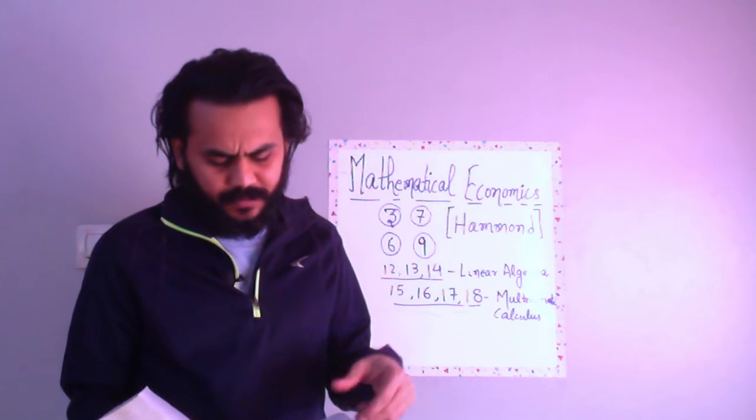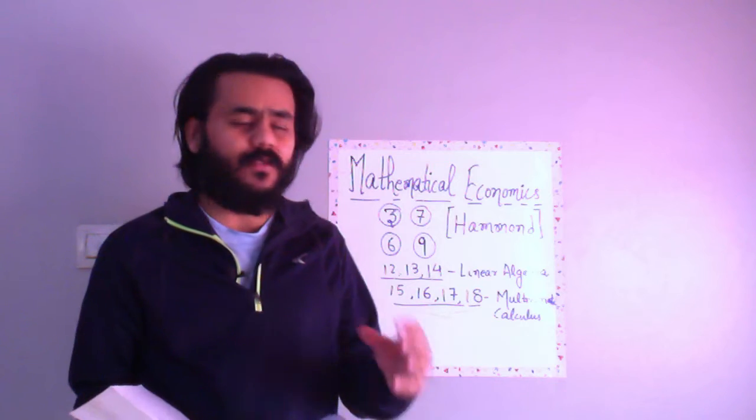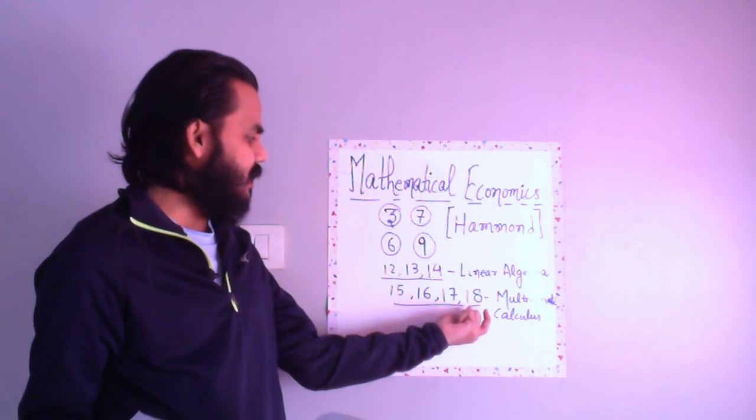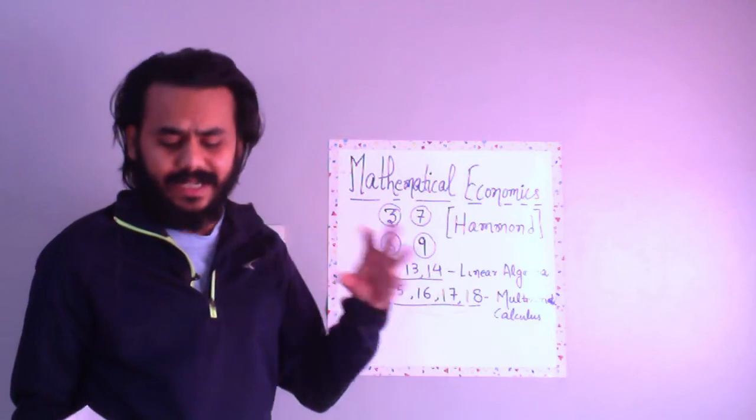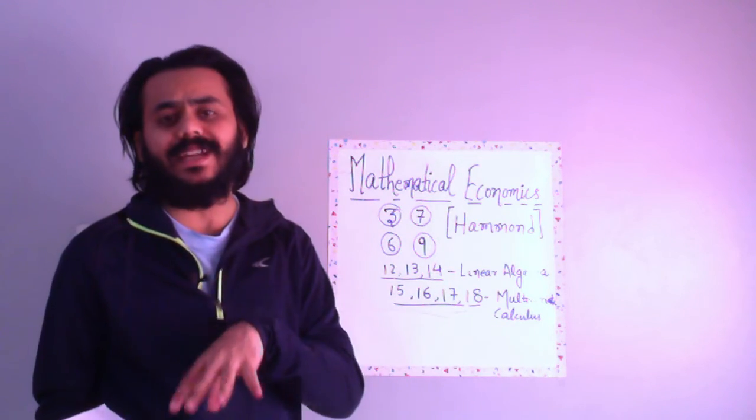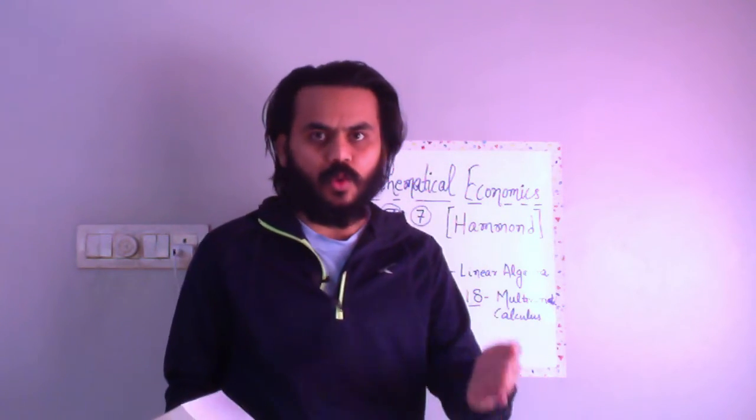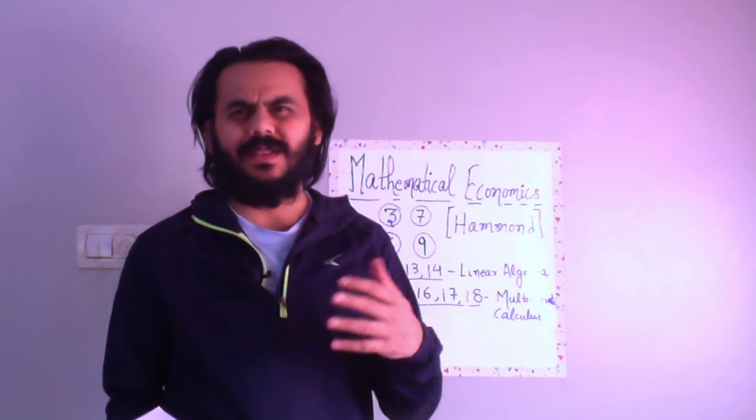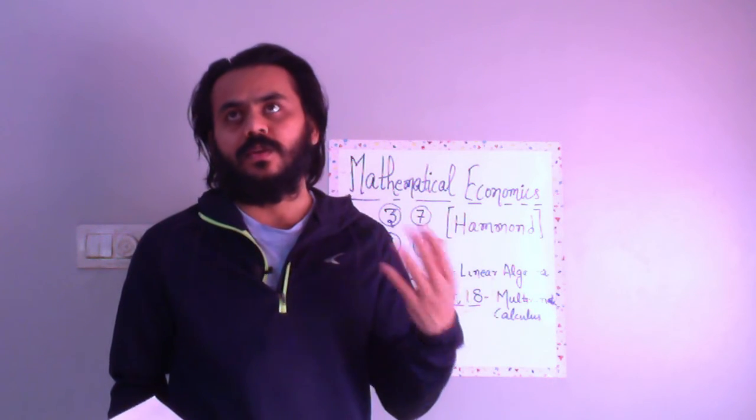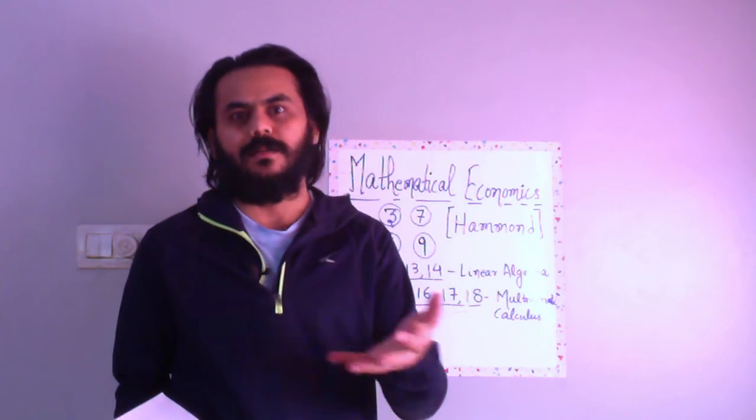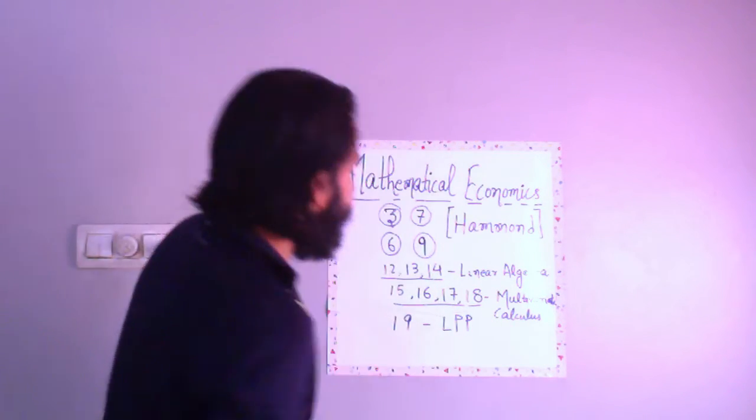Then you have linear programming in chapter nineteen. Linear programming is important because it's part of constraint optimization. Sometimes you can club this in chapter eighteen, but it is separate in this book and rightly so. There is a one-semester course in final year about linear programming - the course is called mathematical programming. Linear programming is also known as LPP, linear programming problem.